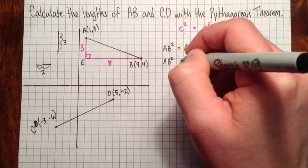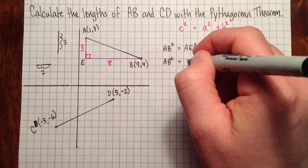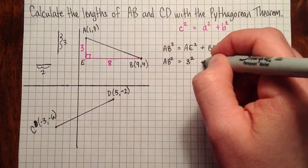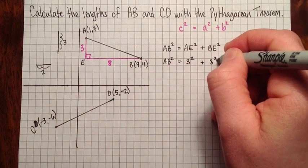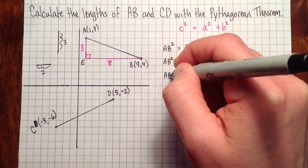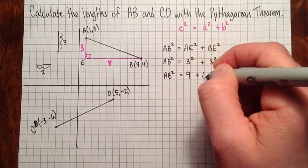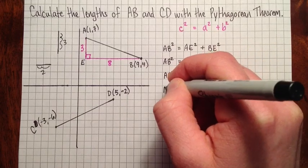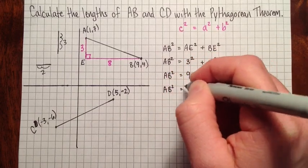So then we have AB squared, and we're going to substitute the lengths that we know. So AE is 3, so we'll have 3 squared. And then BE is 8, so we'll write 8 squared. AB squared is equal to 9 plus 64. So AB squared is equal to, what does that give us? 73.